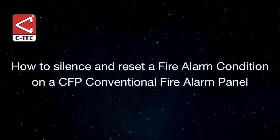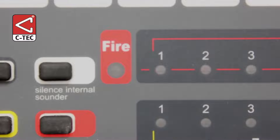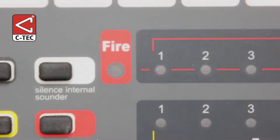How to silence and reset a fire alarm condition on one of CTEK's CFP conventional fire panels. In a fire alarm condition, the panel's internal beeper will sound to inform you that an alarm has been detected. The panel's red general fire and at least one of its zonal indicators will flash to show you which zones are in a fire. In this case, zone 1 is in fire.